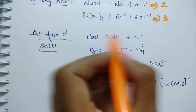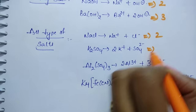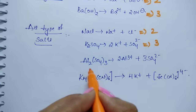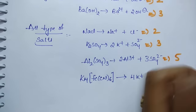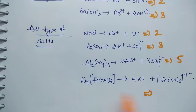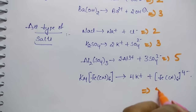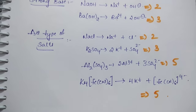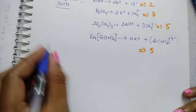For salts: NaCl gives 2 ions, so I = 2. K₂SO₄ gives 3 ions, so I = 3. Al₂(SO₄)₃ gives 5 ions, so I = 5. And K₄[Fe(CN)₆] also gives 5 ions, so Van't Hoff factor I = 5. Now let us discuss for weak electrolytes.